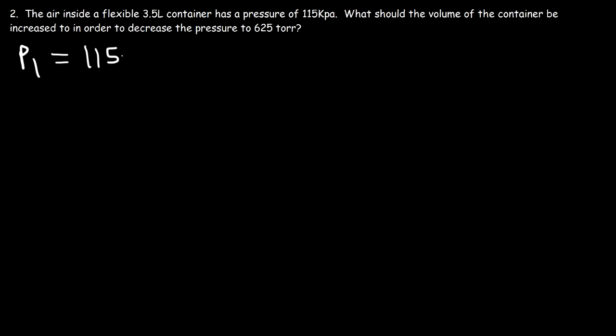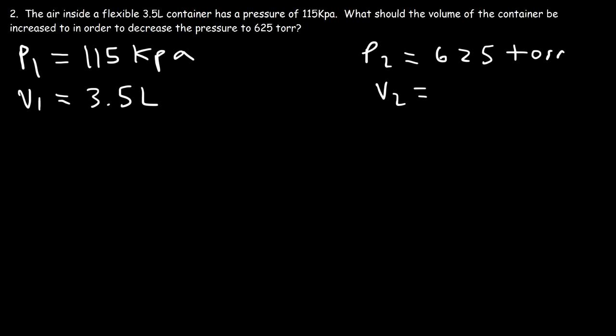P1 is 115 kPa. V1, that's 3.5 liters. Now P2 is 625 torr, and our goal is to calculate V2. Now what you need to realize is that P1 and P2, they should have the same units. Now P doesn't have to always be in atm. It can be in torr, it can be in kPa, it can be in mmHg. However, these two units have to match. So if P1 is in kPa, P2 should be in kPa. If P2 is in torr, then P1 should be in torr. It doesn't matter which one is which, as long as they match. So I'm going to convert P1 into a torr value.